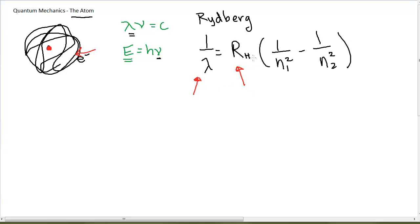Rydberg's constant. You can look it up. It has units of 1 over wavelength, like 1 over meters or 1 over centimeters. You can find it both ways. And my n1 and my n2 are whole number integers that just happen to work to give me lambda.